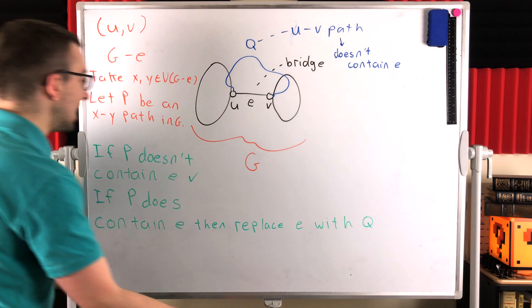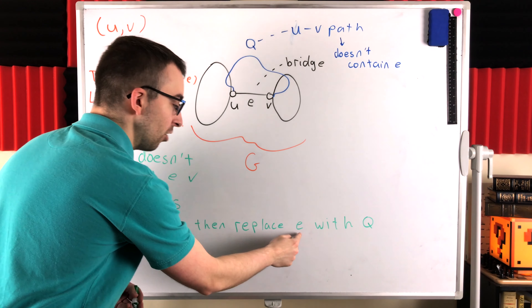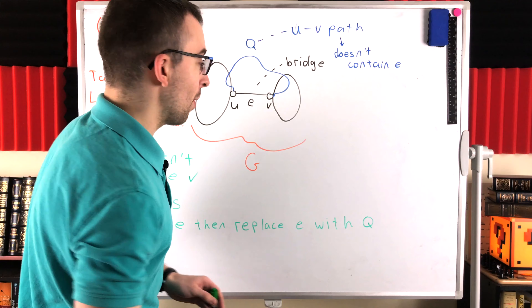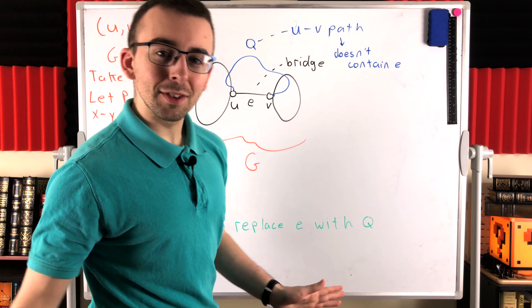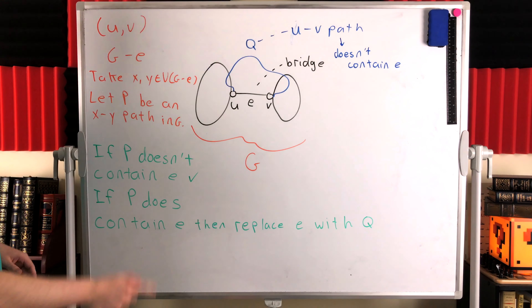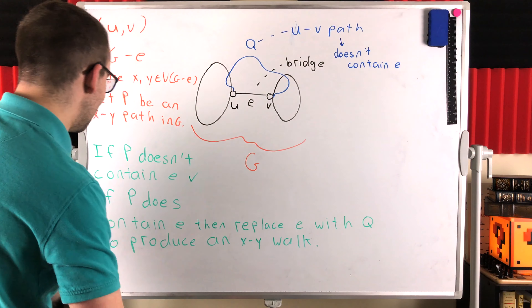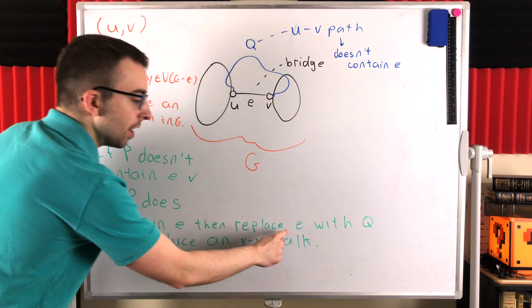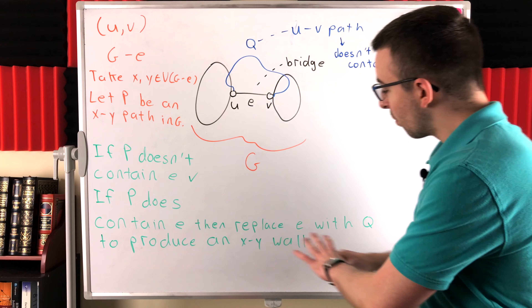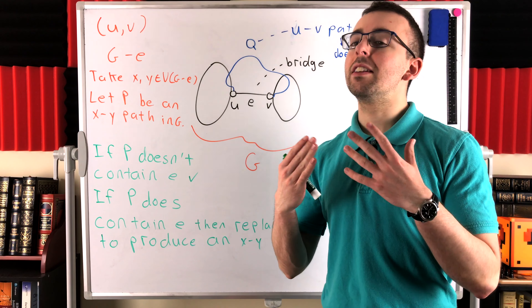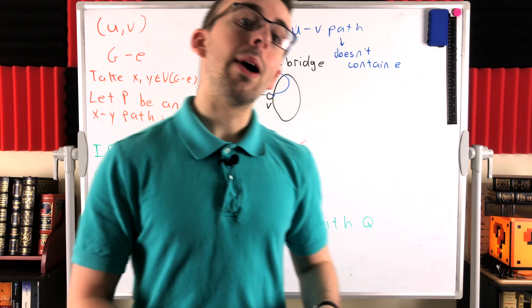So if we replace the edge E in our XY path P with the UV path Q, we get a walk — we definitely have a way to get from X to Y in the graph G minus E. If P does contain E, then replace E with Q to produce an XY walk in G minus E. And that's all we need, because where there is a walk connecting two vertices, there must be a path. So if there's a walk, there is also a path, and X and Y are connected.